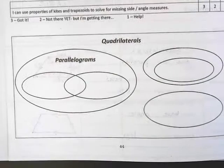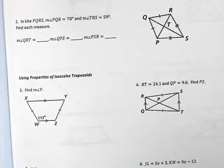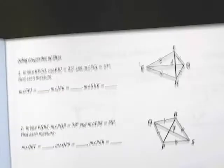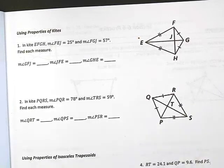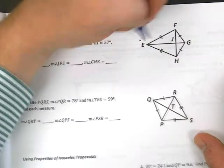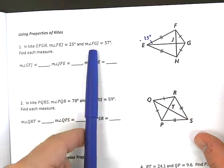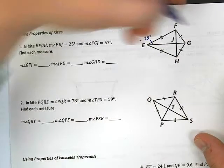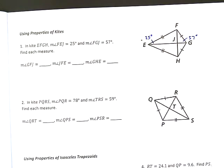Alright? Now, I'm going to skip this diagram down at the bottom here because we're going to do it on our big organizer in class tomorrow. So, let's skip ahead and let's do some practice problems that require us to use our properties of kites and trapezoids. Alright, so, first two, kites. Let's see here. In kite EFGH, angle FEJ is 25 degrees, so 25 degrees. And angle FGJ is 57 degrees. Interesting. Okay, find each measure.